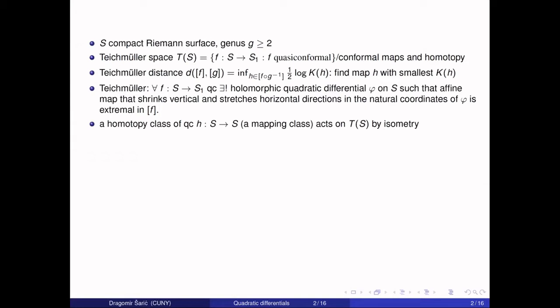After that, you can talk about the mapping class group. If you take a quasiconformal map from the surface S to itself, this map acts on the Teichmüller space by isometry with respect to the Teichmüller distance. The next question is: what are all isometries of the Teichmüller space? Royden's theorem—minus some lower genus cases—says that any isometry of the Teichmüller space is induced by a particular mapping class.